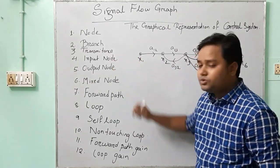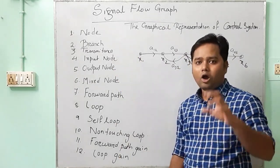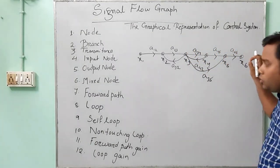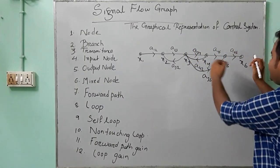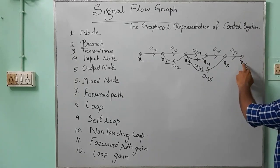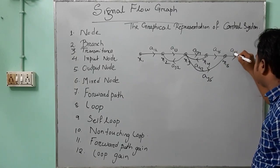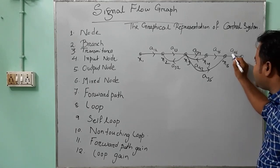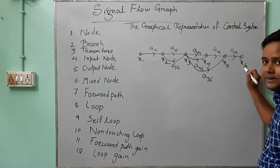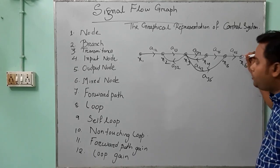Next, we go for the output node. What is the output node? Output node means the node to which the input signal is present, but no outgoing signal is there. At X6, A56 is the branch transmittance from X5 to X6. That means X6 is the output node.